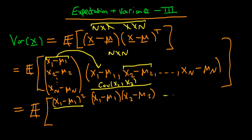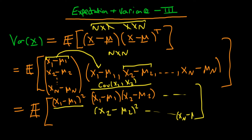Continuing for further elements, we get the covariance matrix we had before. Each diagonal element is the variance: the second diagonal element is (x2 minus mu2) squared, continuing through to the last component (xn minus mun) squared, which when we take the expectation is the variance of random variable xn. So we've proved that this definition does add up to the variance-covariance matrix defined in the last video.